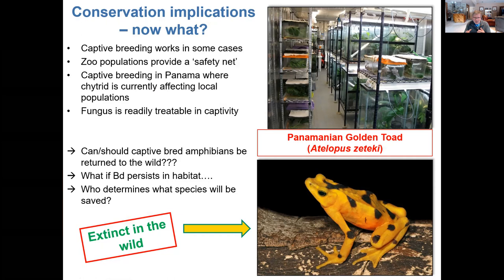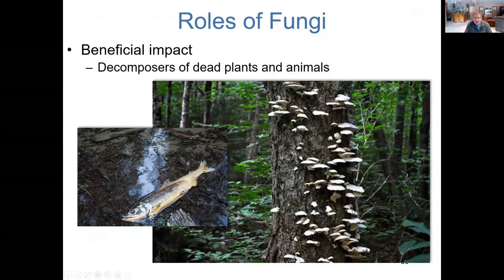There's an ethical moral question: what species do we decide to save and which do we not? It's very expensive to take an animal out, put it in a laboratory, captively breed it, and provide aquaria and food. But as a result of chytridiomycosis, this particular beautiful frog is thought to have become extinct.